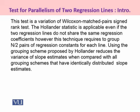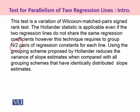The Hollander statistic is applicable even if the two regression lines do not share the same regression coefficients. However, this technique requires us to group N by two pairs of regression constants for each line. Using the grouping scheme proposed by Hollander, it reduces the variance of the slope estimates when compared with all grouping schemes that have identically distributed slope estimates.